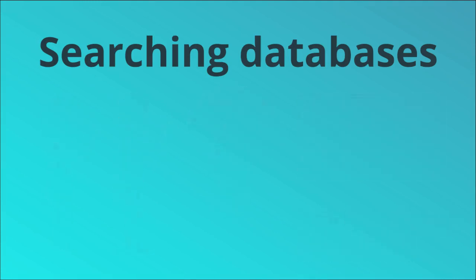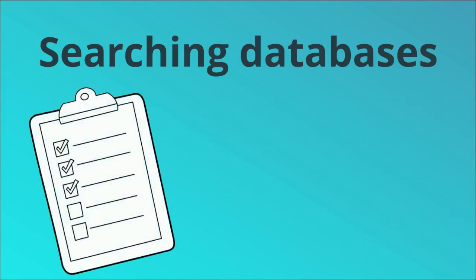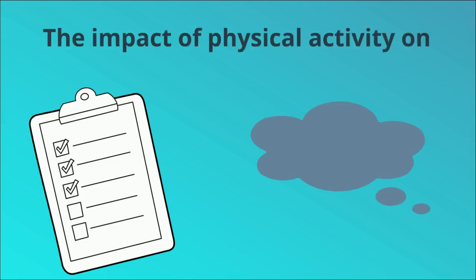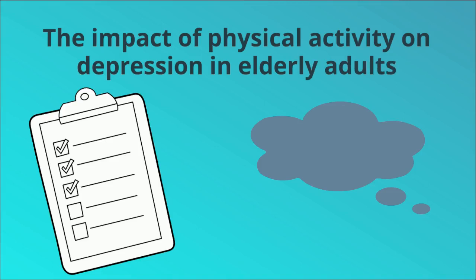First, you need to have done your groundwork. Think about what you want to find out and what words could be used to describe that topic. I'm going to take the example of the impact of physical activity on depression in elderly adults. My preparation for this would be to focus on the most important parts of the topic: physical activity, depression, elderly.